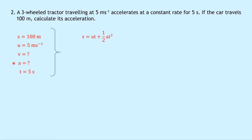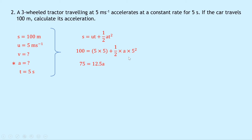Writing down the equation, we have S equals UT plus a half AT squared. Substituting in gives 100 equals 5 times 5 plus a half times A times 5 squared. Simplifying that: we get 25 here, and a half times 5 squared — well, 5 squared is 25, so half of 25 is 12.5. So subtracting 25 from both sides and simplifying to 12.5A, we get 75 equals 12.5A, and dividing both sides by 12.5 gives A equals 6 meters per second squared.